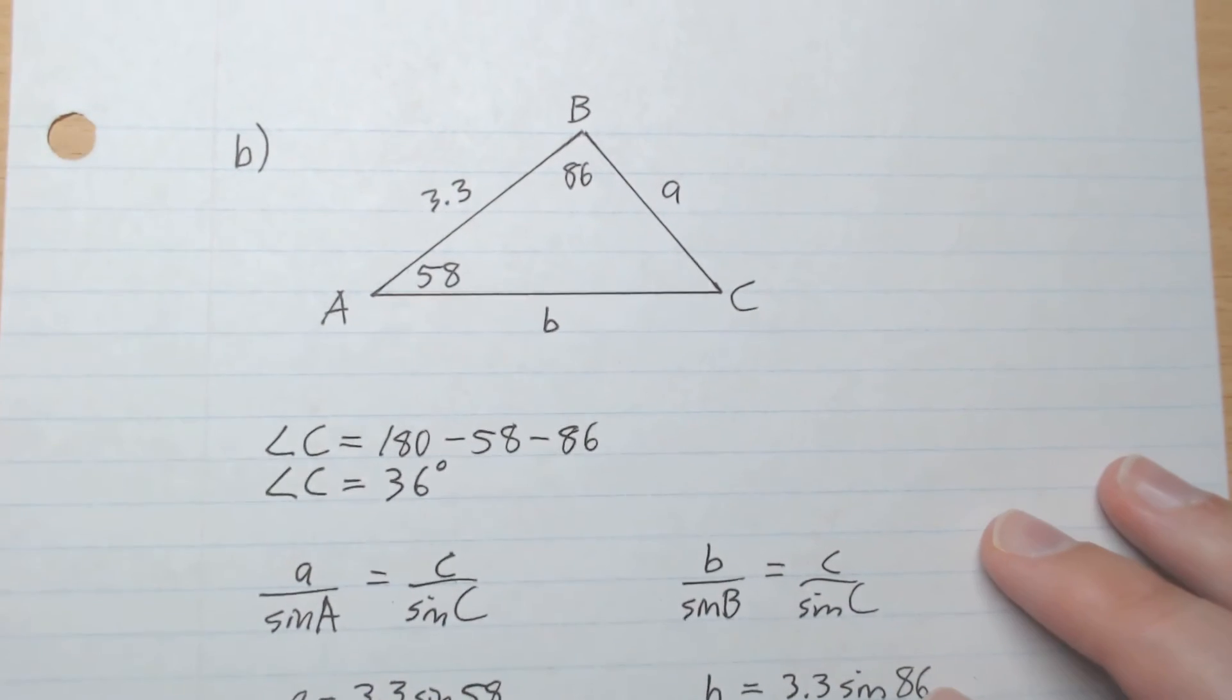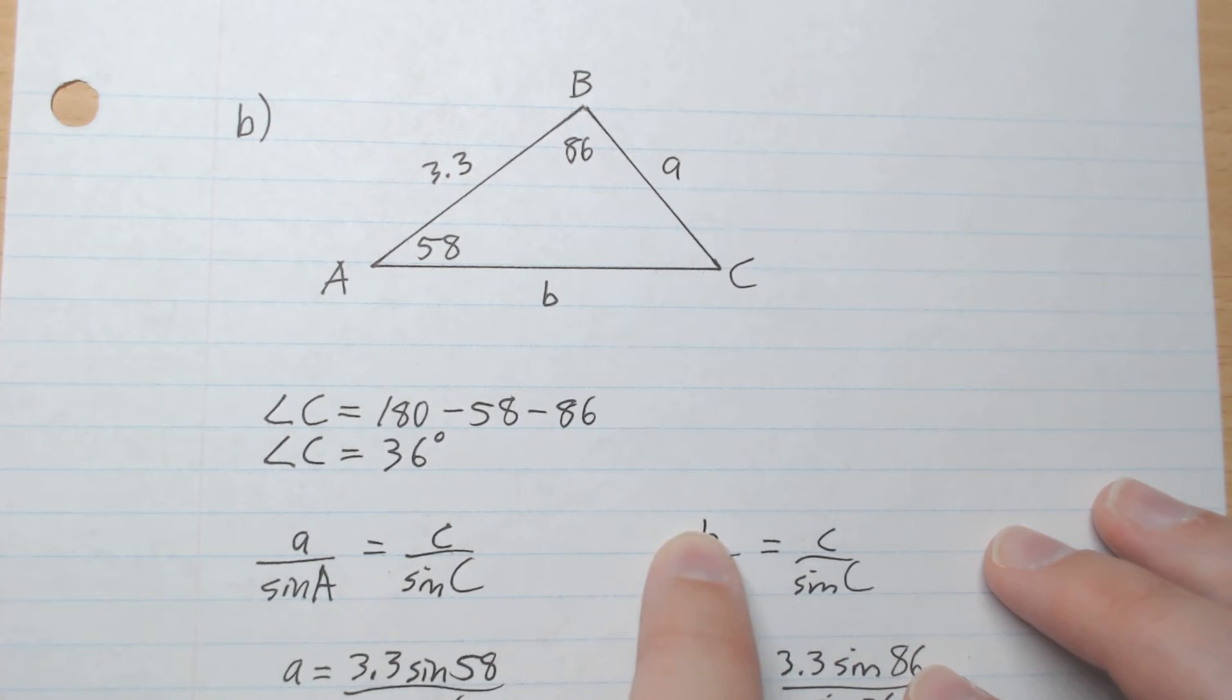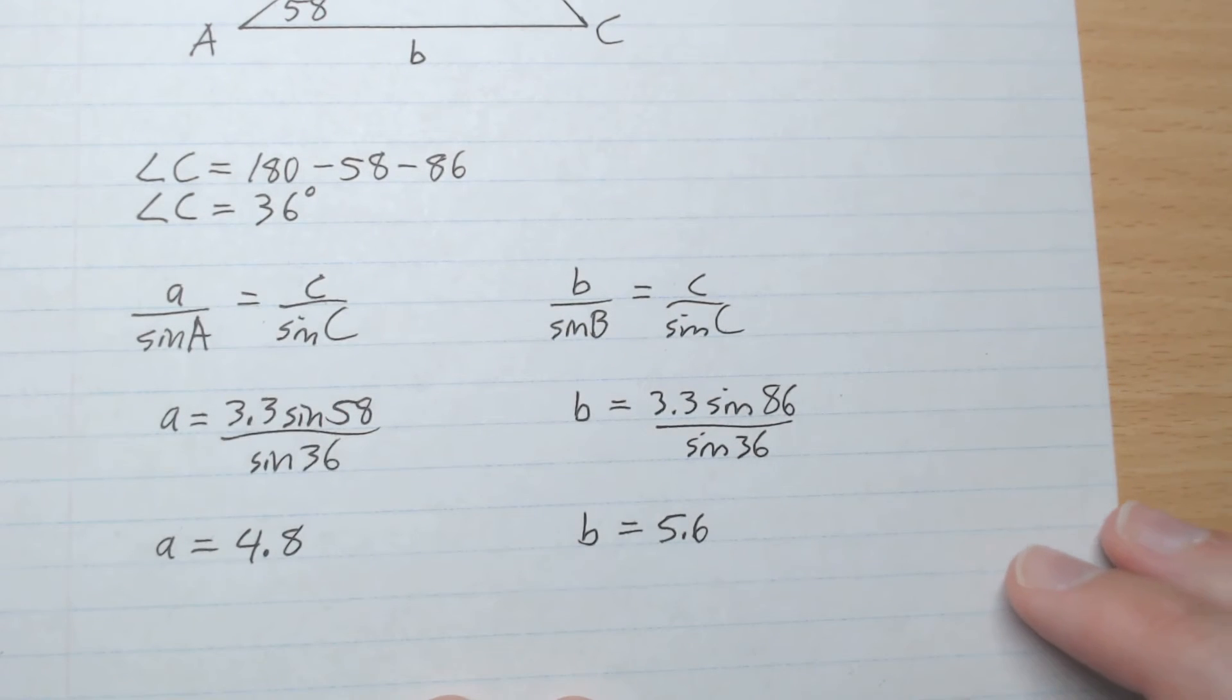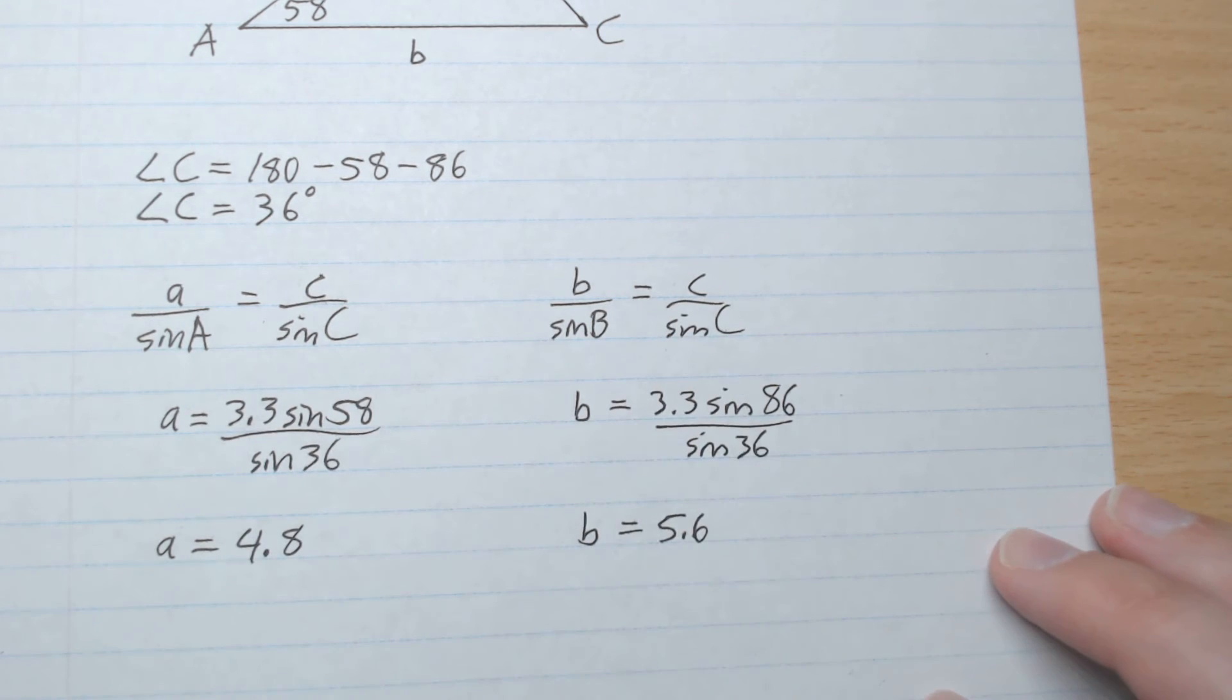Next, we have angle B but not side b. So we're looking for side b. Multiply sine B to both sides, plug in what we know, and our b value is 5.6.